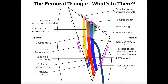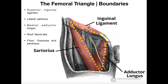Before we go into any detail on what's in the femoral triangle, we need to understand its boundaries. It's a triangle, so it has three sides. On the top — the superior boundary — this is the inguinal ligament, which connects the anterior superior iliac spine, or ASIS, to the pubic tubercle.